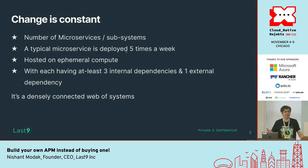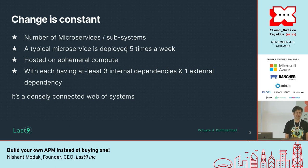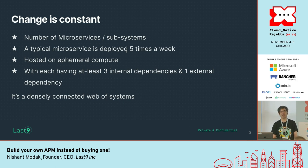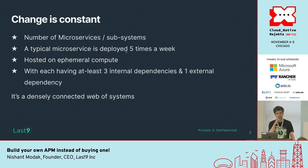We all deal with Kubernetes, so change is a constant. The number of microservices or subsystems is constantly growing across the company, and we deploy them at least more than five times a week. The dependencies — internal and external — are only exploding, with at least three internal and probably more. It's almost like a web within our production system itself, similar to the internet where there are so many dependencies.